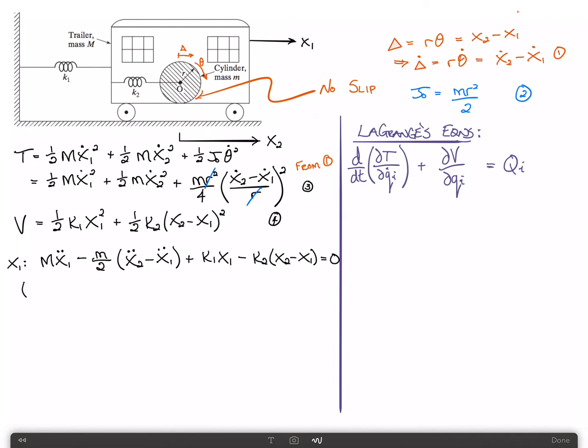We can simplify this as M plus little m over 2 times x1 double dot, minus m over 2 times x2 double dot, plus k1 plus k2 times x1 minus k2 x2 equals zero. That is your first equation of motion. We'll call that number five.